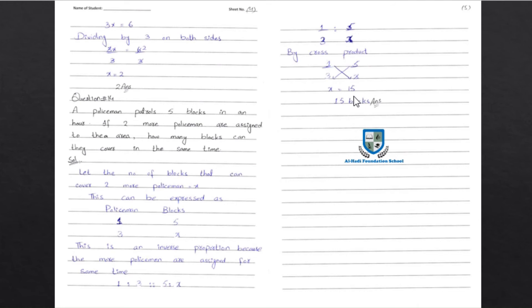So if 1 policeman was covering 5 blocks and now there are 3 policemen, both quantities increased — making it direct proportion — and they cover 15 blocks. Answer is 15. Questions 12, 13, and 14 are completed, and all of Exercise 6B is also completed.